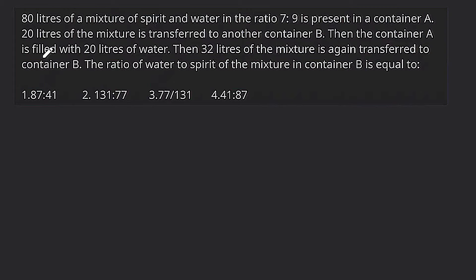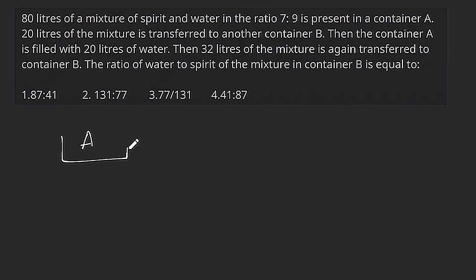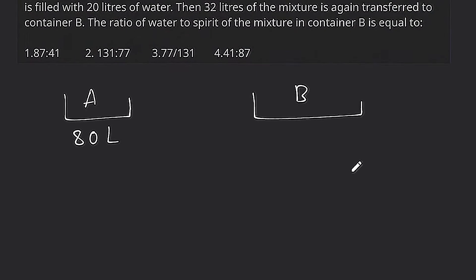Hello students, good evening, welcome back. The question is: 80 liters of a mixture of spirit and water in the ratio 7 to 9 is present in container A. There is another container B. The 80-liter mixture has spirit and water in the ratio 7 to 9.